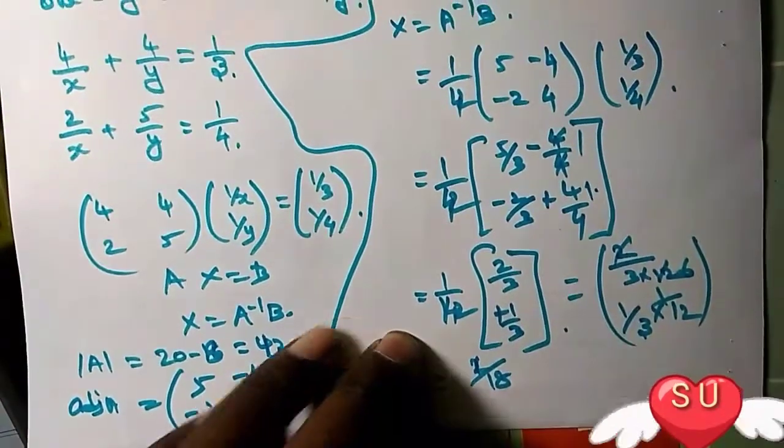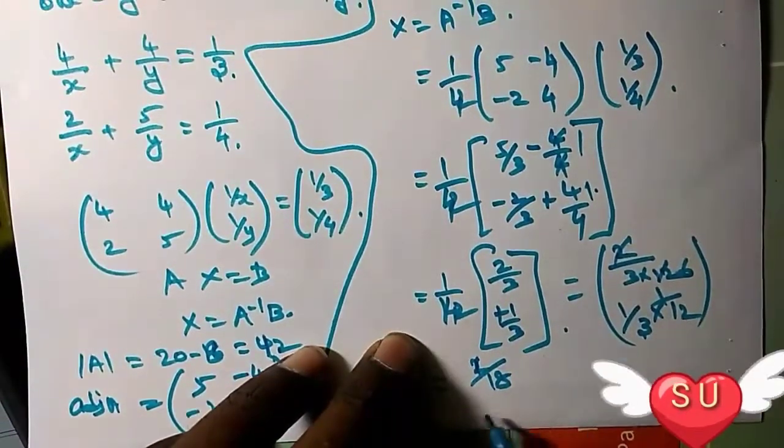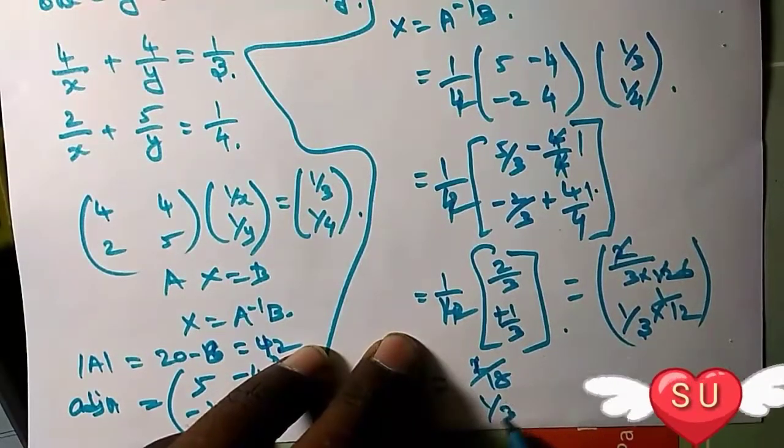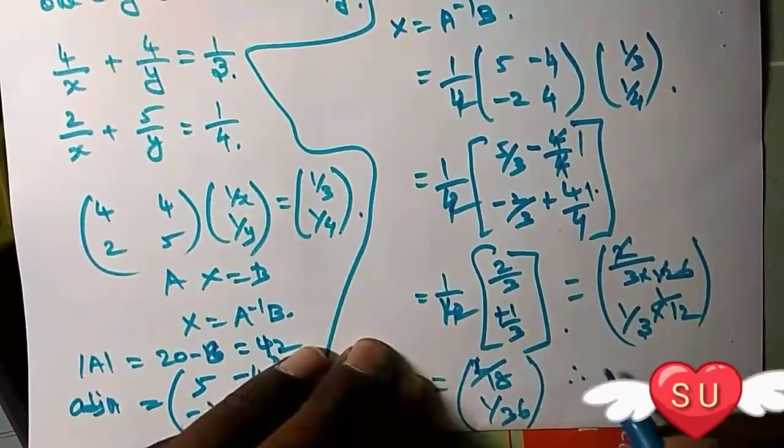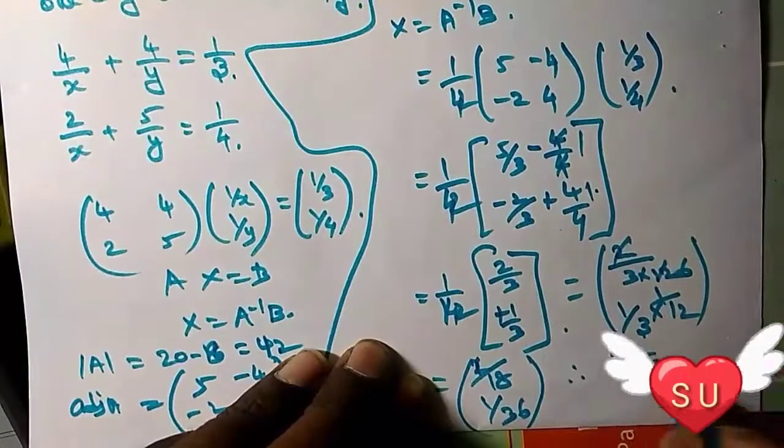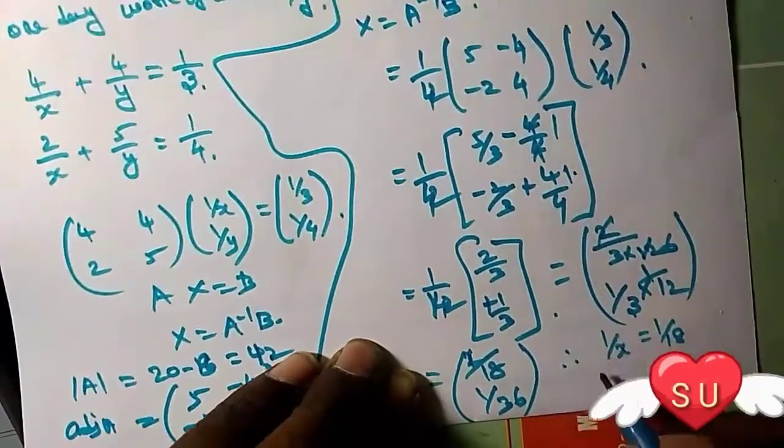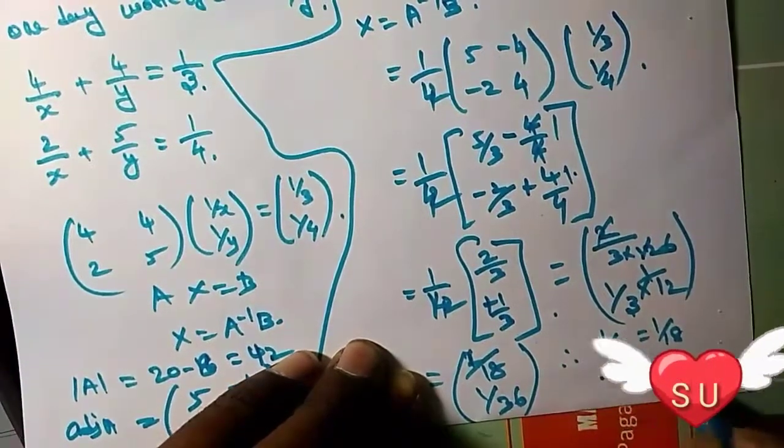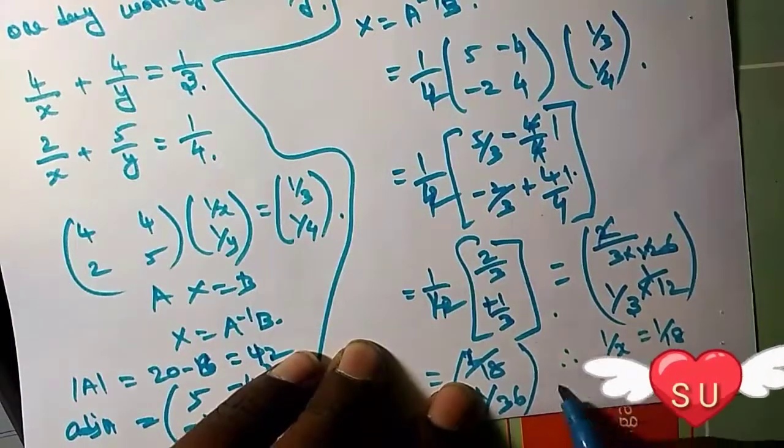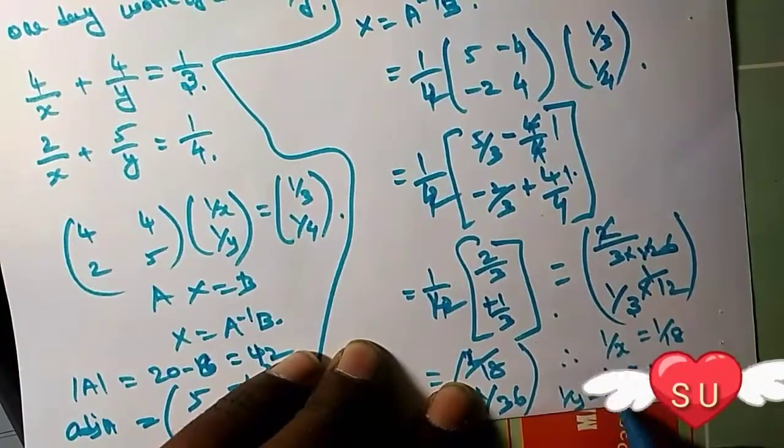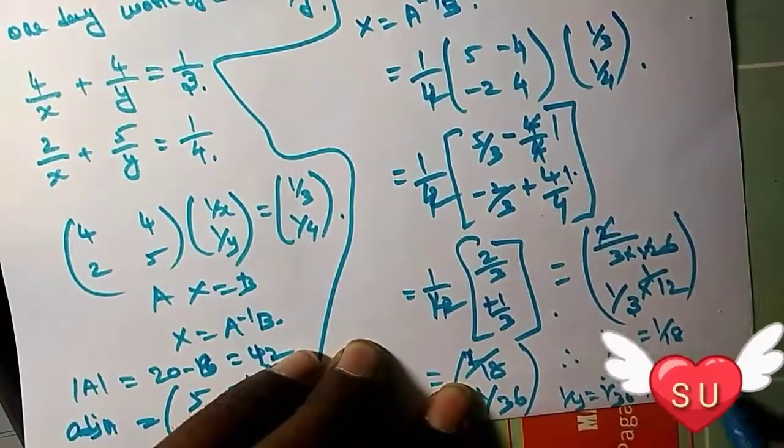Therefore one by X equals one divided by eighteen, therefore X equals eighteen. One divided by Y equals one divided by thirty-six, therefore Y equals thirty-six. This is your answer.